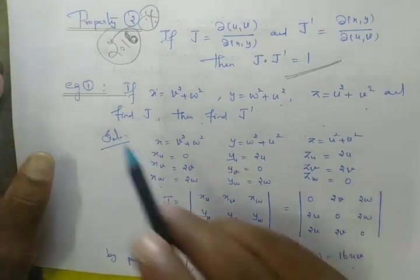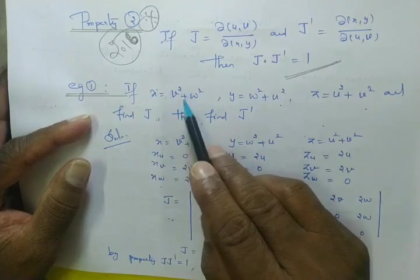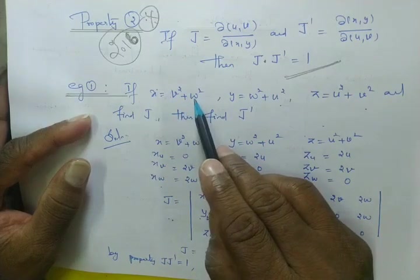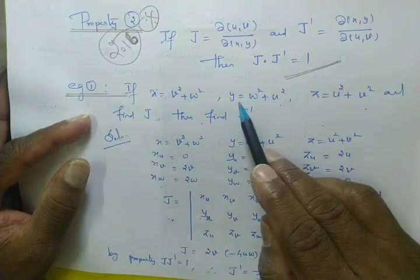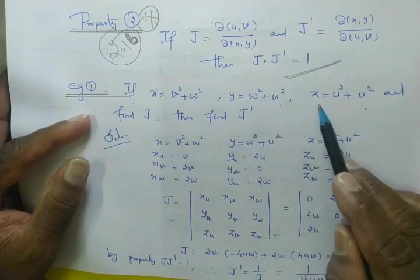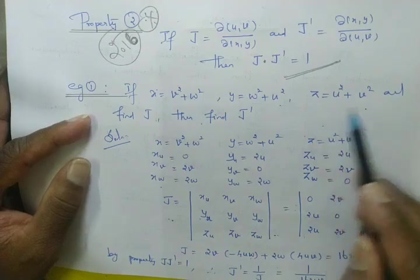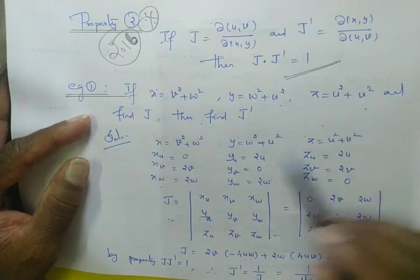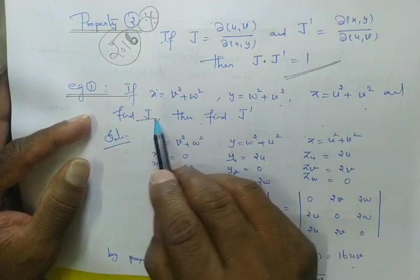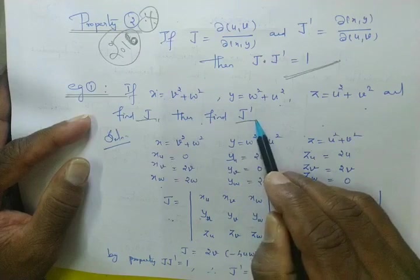Now, x is equal to v squared plus w squared, y is equal to w squared plus u squared, z is equal to u squared plus v squared. Find J and also find J dash.